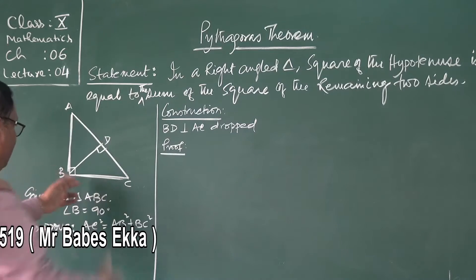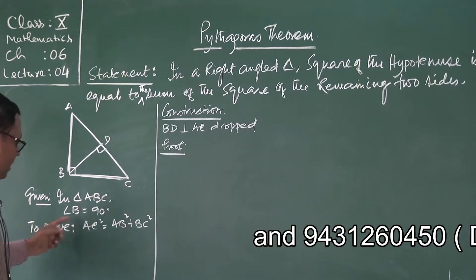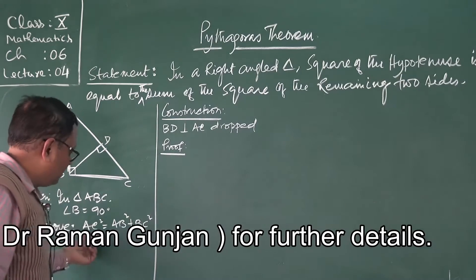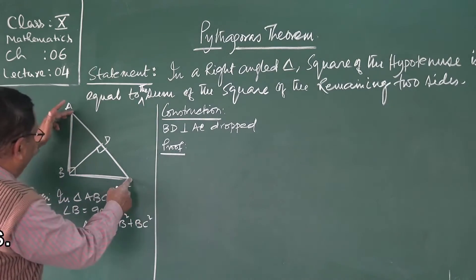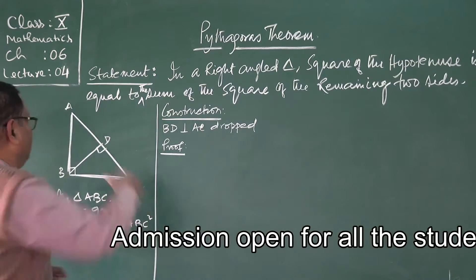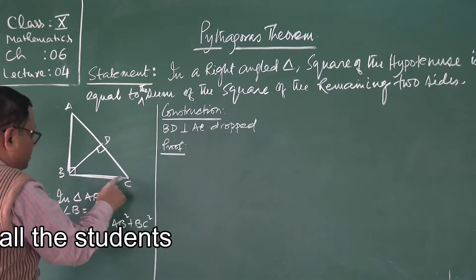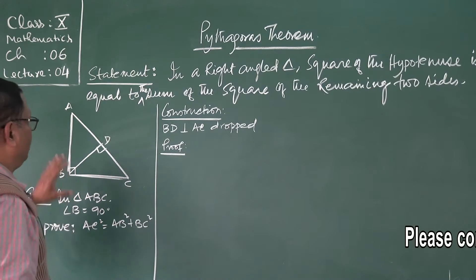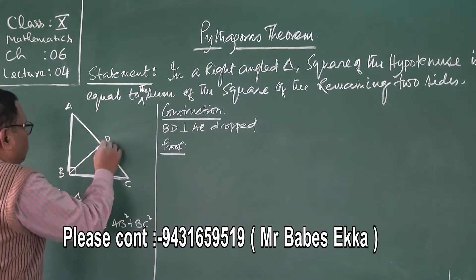I have made a triangle ABC and named angle B equal to 90 degrees. We have to prove that AC square is equal to AB square plus BC square. AC is the hypotenuse — the side opposite to the 90 degree angle B is the hypotenuse. In order to prove this, we will draw a perpendicular from B on AC.